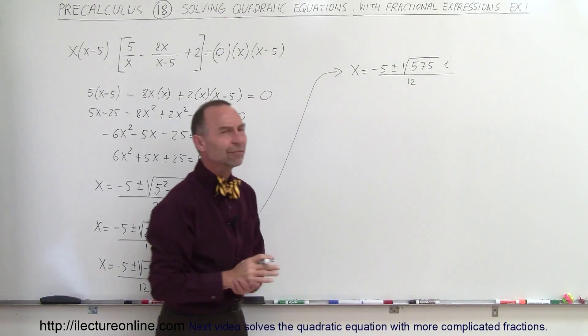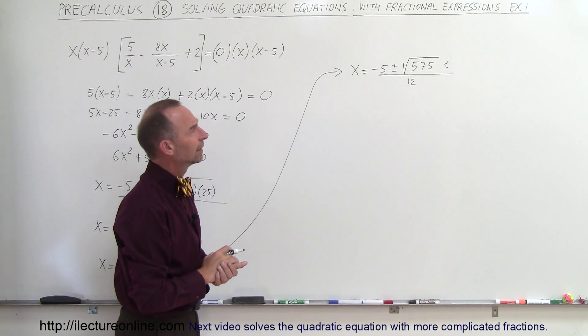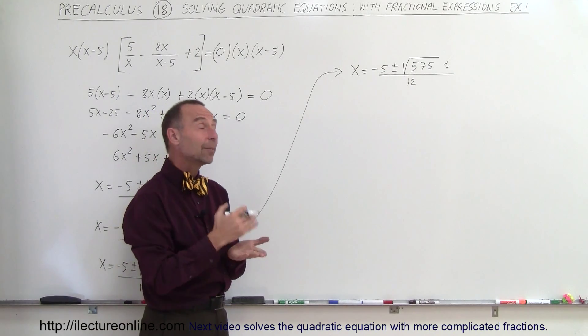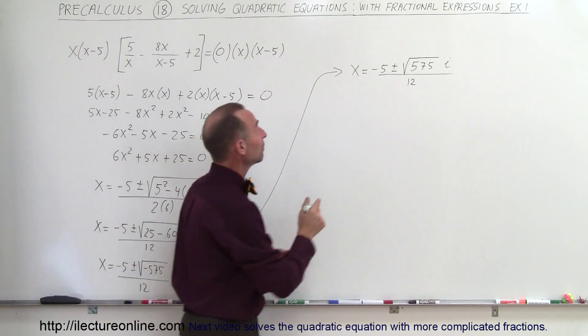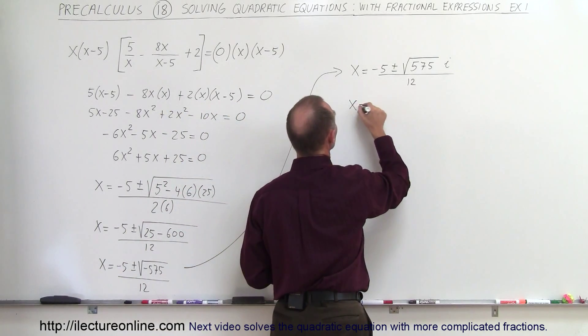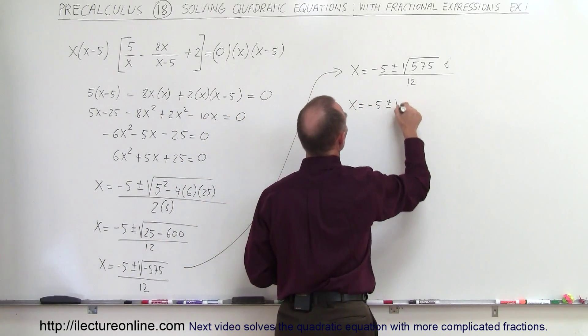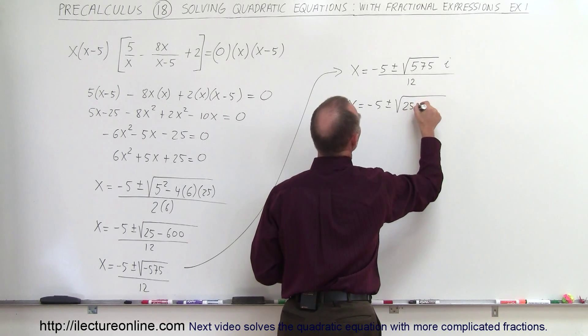All right, now let's see here, 575. We know that 600 can be divided by 25, that means 575 is divisible by 25. That means we can write this as x is equal to minus 5 plus or minus the square root of 25 times